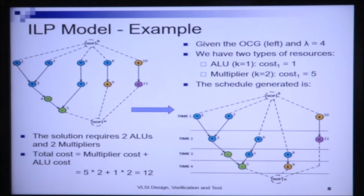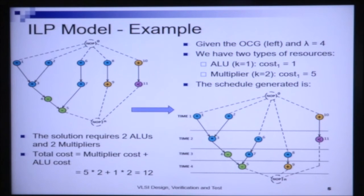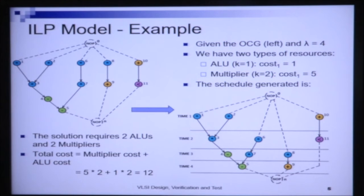To schedule within 4 time steps you need at least 2 ALUs and 2 multipliers — that is the least-cost solution in terms of area. The total cost is: 2 multipliers × 5 = 10, plus 2 ALUs × 1 = 2, giving a total area cost of 12.